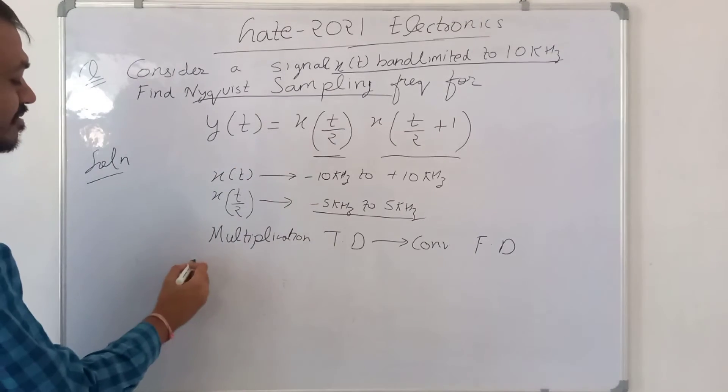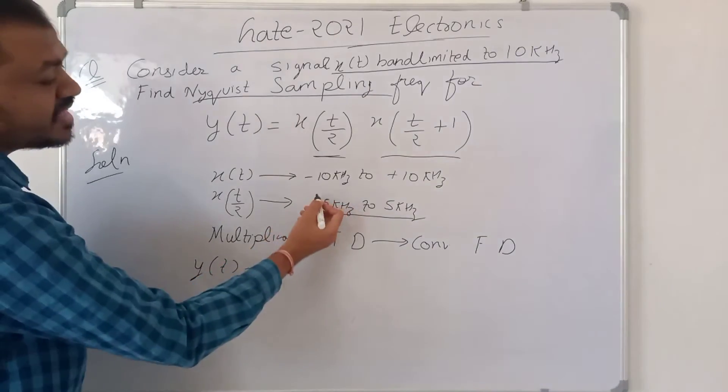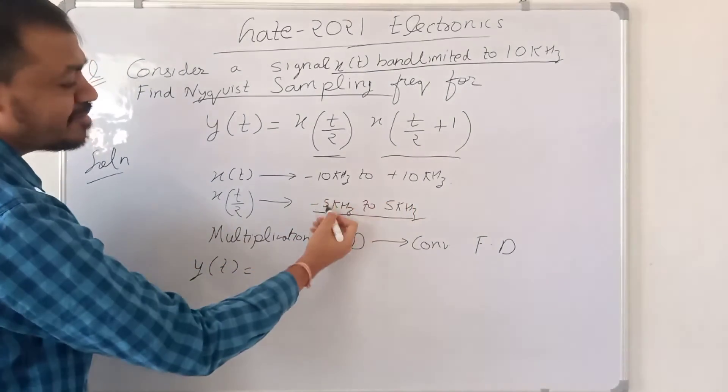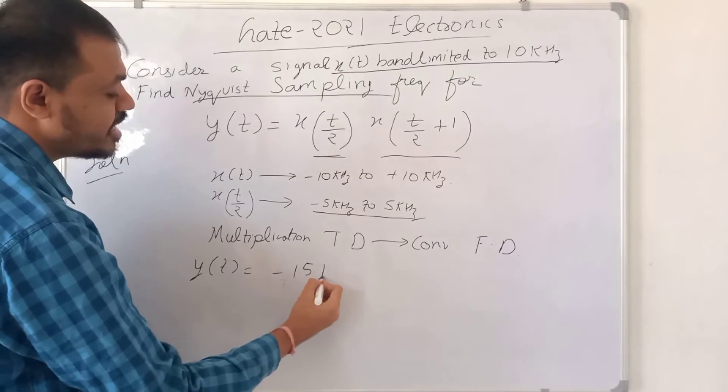So when we convolve these two signals, then Y(t) will exist from—their upper band and lower band will simply add up. So minus 15 kHz to plus 15 kHz.